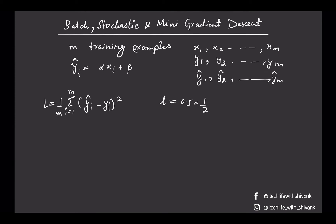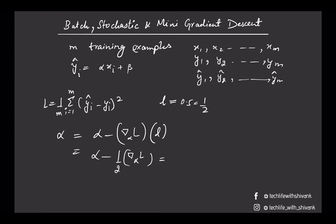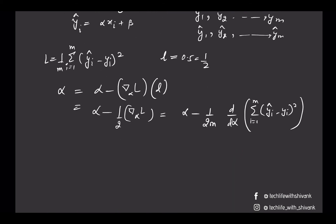Let's say we have to update our parameter alpha. Alpha would be equal to the existing alpha minus the gradient of the loss function with respect to alpha, multiplied by the learning rate. This equals alpha minus 1/(2m) times the derivative with respect to alpha of the sum from i=1 to m of (y_i-hat minus y_i) squared.